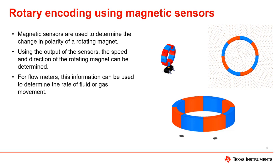For flow meters, the number of rotations per minute can be used to calculate the rate of fluid or gas movement. For more information on rotary encoding, watch our TIPL video 3.1, Using Hall Effect Position Sensors for Rotary Encoding.